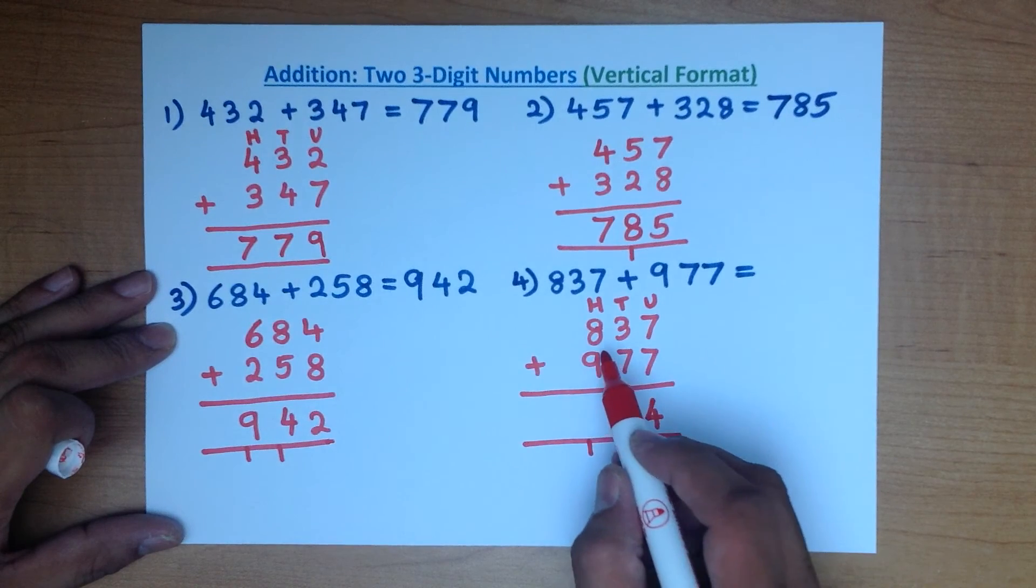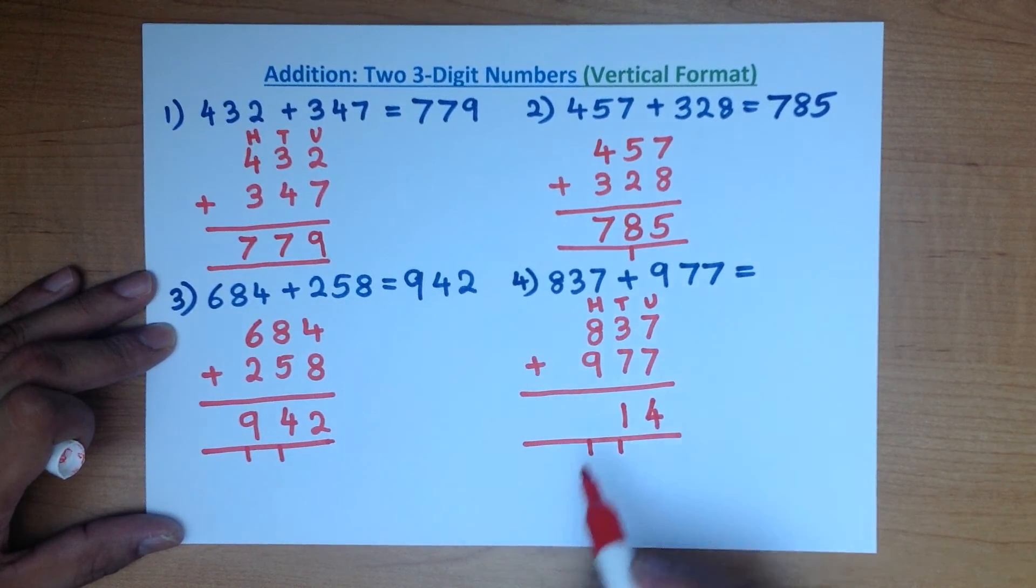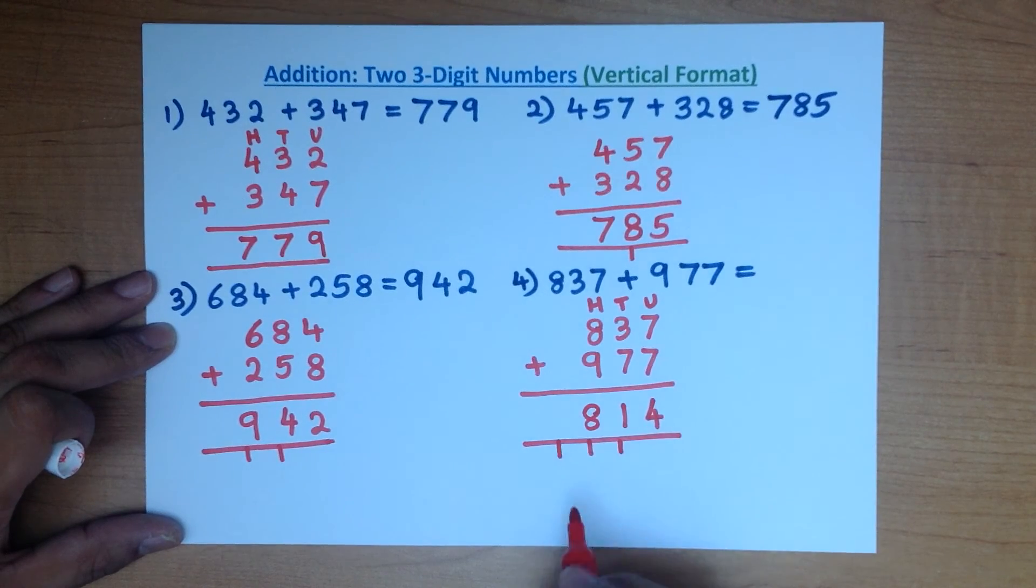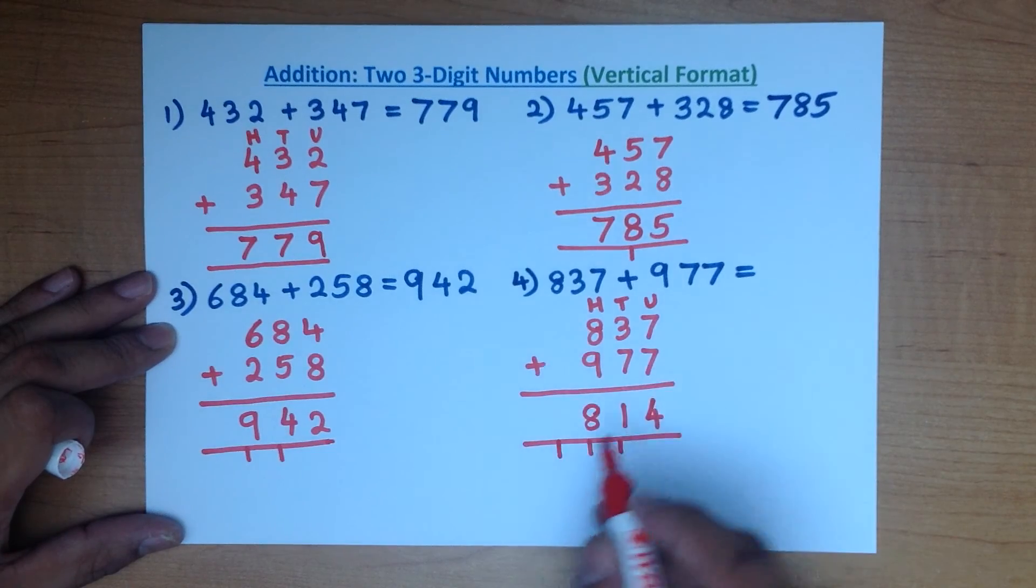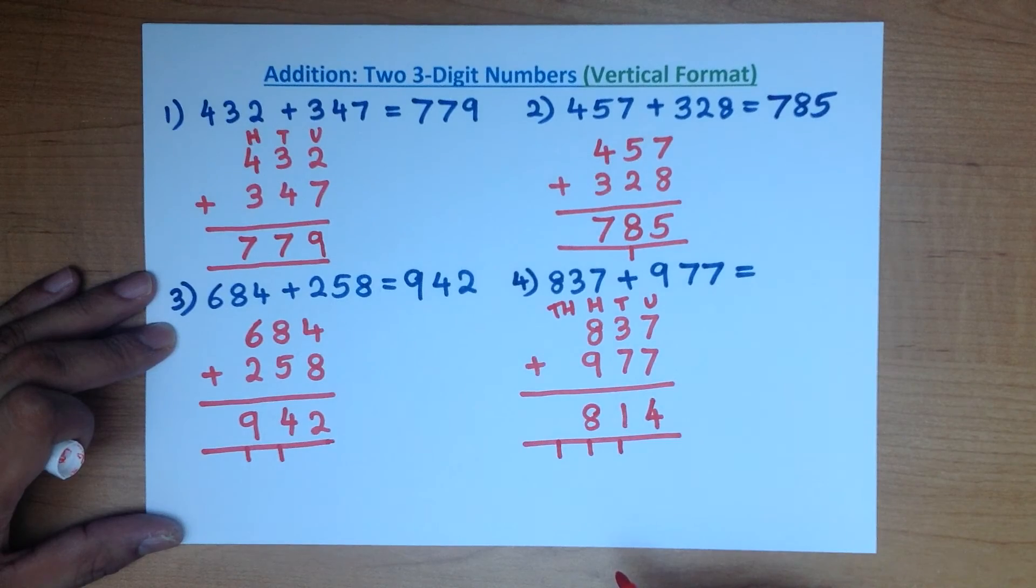We now add the hundreds. 8 plus 9 plus 1. Well, we know that 9 plus 1 is 10, plus the 8 is 18. This 1 is now part of a new column, and that column is the thousands. We write a th for the thousands.